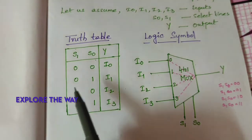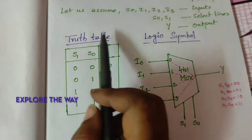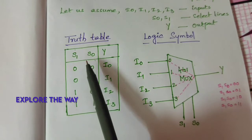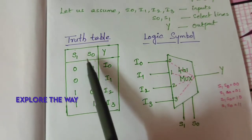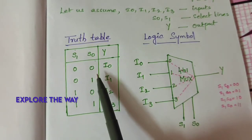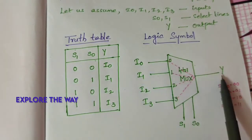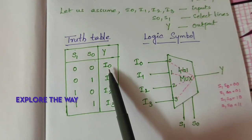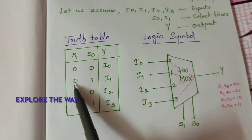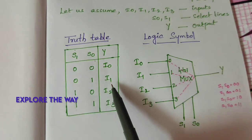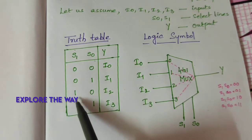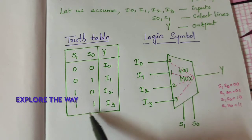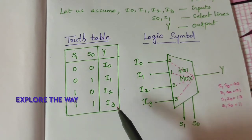Let us write its functionality using a truth table. When S1, S0 is 0, 0, output equals I0. When it is 0, 1, I1 is the output. When it is 1, 0, I2 is the output. When it is 1, 1, I3 is the output.